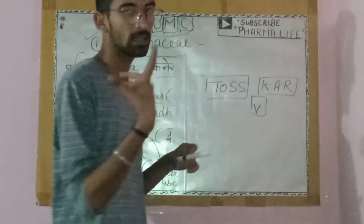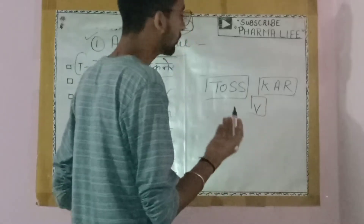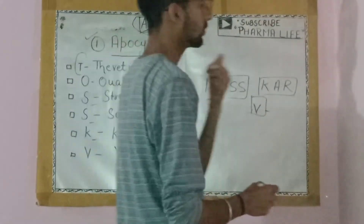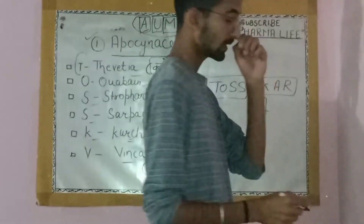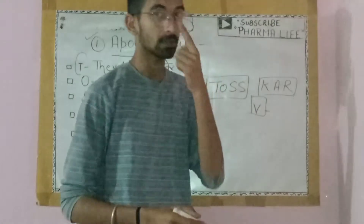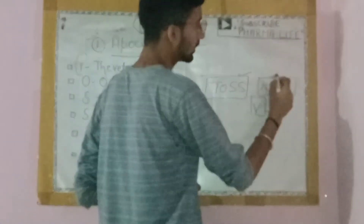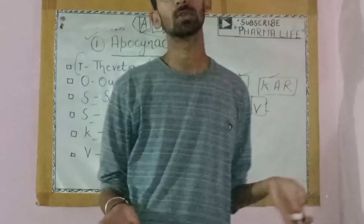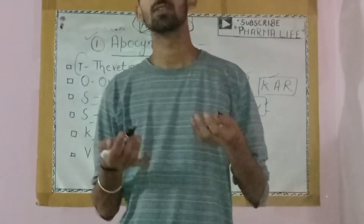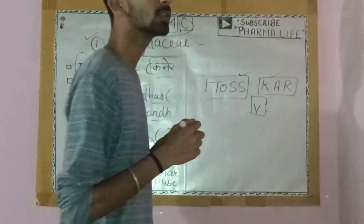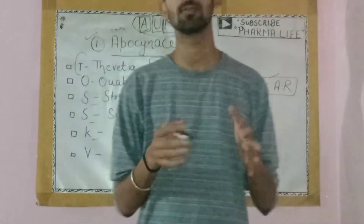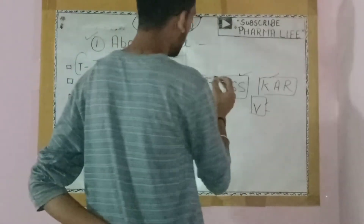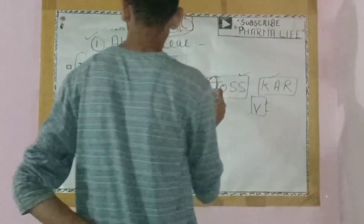You will choose B, or a friend's name — like toss or Vinod. I have to choose Vinod, Vinit. So here, you will choose T, O.